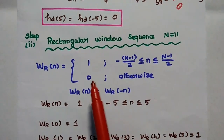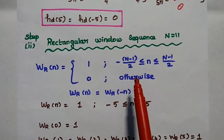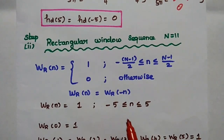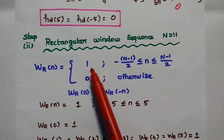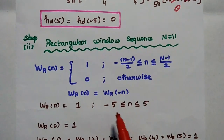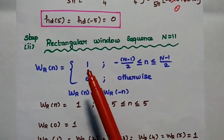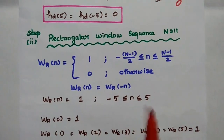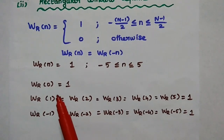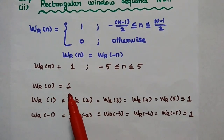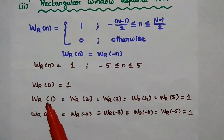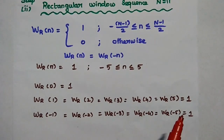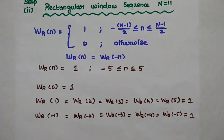The second step is to find the rectangular window sequence for N=11 samples. The rectangular window method is very simple because the window values are always 1 for the given duration. The limit is from −5 to +5, so the coefficients of the rectangular window sequence are: wr(0) = wr(1) = wr(2) = wr(3) = wr(4) = wr(5) = wr(−1) = wr(−2) = wr(−3) = wr(−4) = wr(−5) = 1.